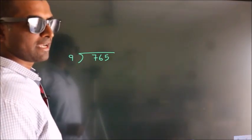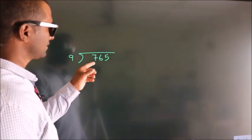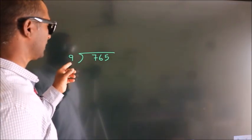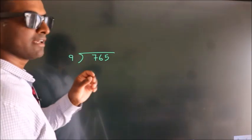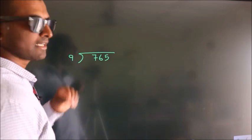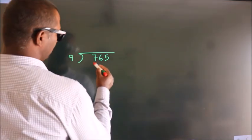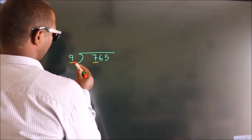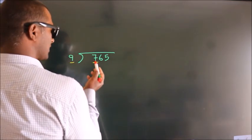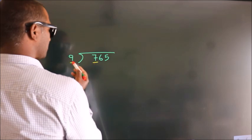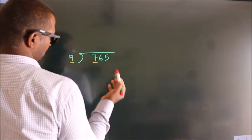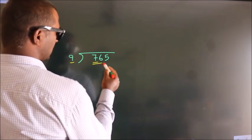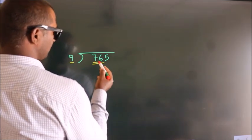How to divide 765 by 9. Here we have 7, here 9. 7 is smaller than 9, so we should take 2 numbers: 76.